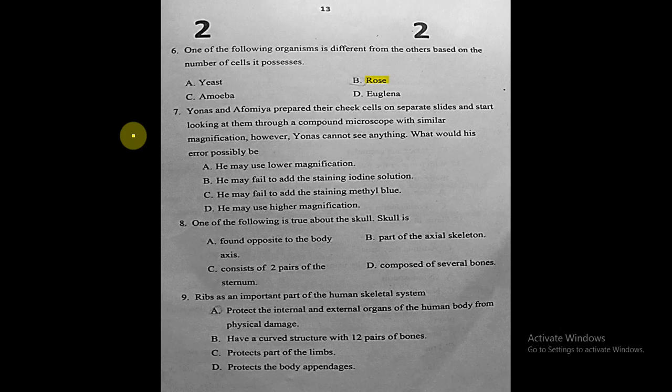Question seven: Yunus and Afomya prepare cheek cells on separate slides and look at them under a compound microscope with similar magnification, but Yunus cannot see anything. His possible error would be that he may have failed to add the staining methylene blue. That is the correct answer.